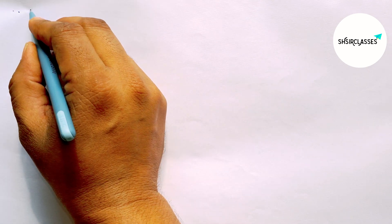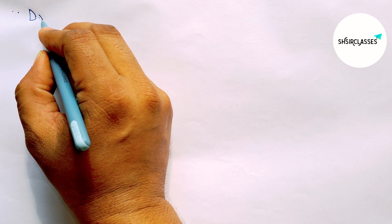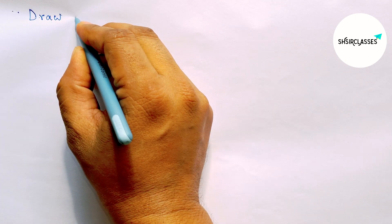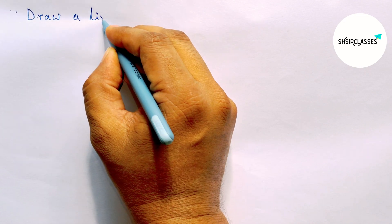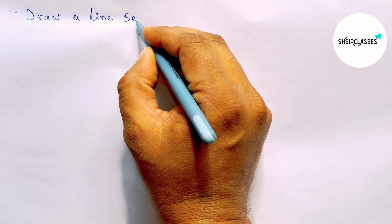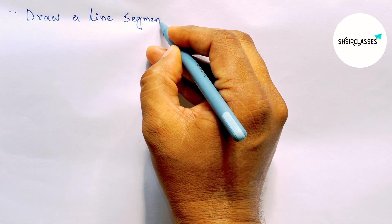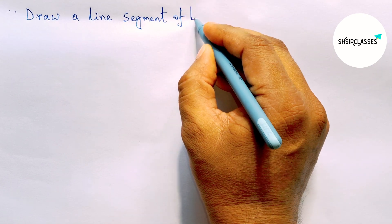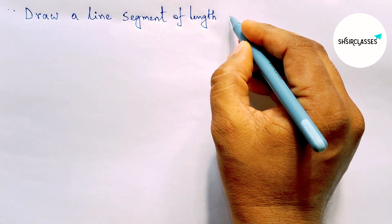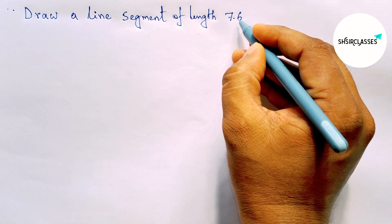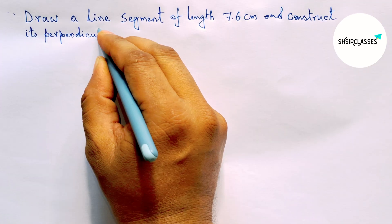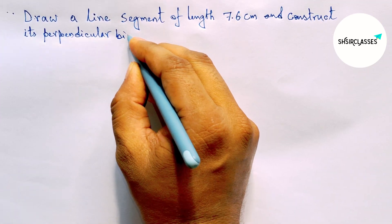Hi everyone, welcome to Sai Share Classes. Today in this video, we'll draw a line segment of length 7.6 centimeters and construct its perpendicular bisector in an easy way. Please watch the video till the end.